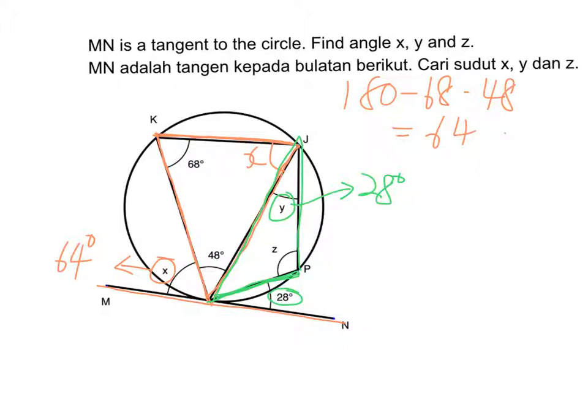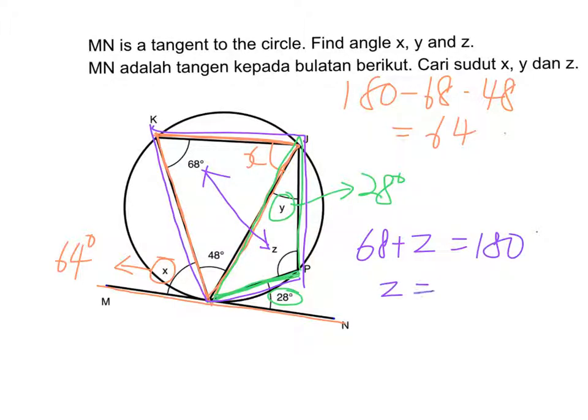Finally, we want to find z. Now this whole thing is a cyclic quadrilateral. And 68 and z are interior opposite angles, which means that the sum of these two angles will give us 180 degrees. So 68 plus z equals 180. So z is 180 minus 68 degrees, and we get 112 degrees.